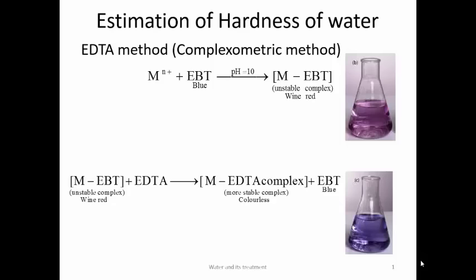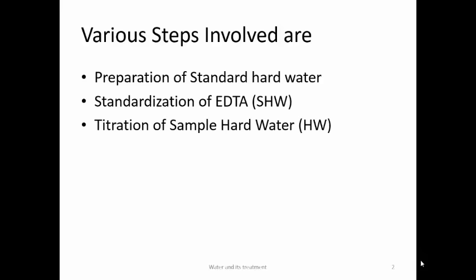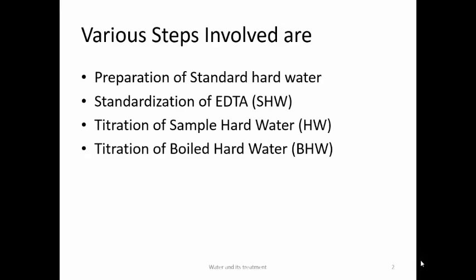For this method, three titrations are carried out. Step 1: preparation of standard hard water, prepared by dissolving 1 gram of CaCO₃ in 1 liter of water. Since CaCO₃ is insoluble in water, a little HCl is added to convert it to calcium chloride, which is soluble. Step 2: standardization of EDTA. Step 3: titration of the sample of hard water. Step 4: titration of boiled hard water. In boiled hard water, temporary hardness is removed, so whatever remains is just permanent hardness.